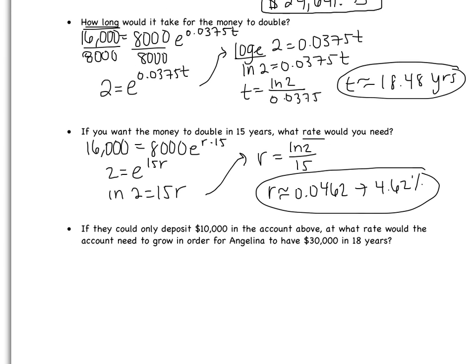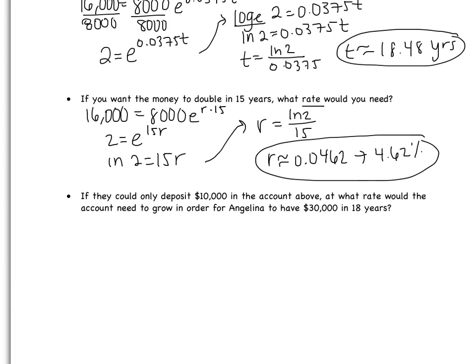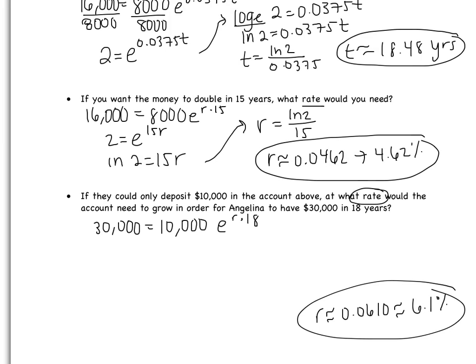If they could only deposit $10,000, at what rate would the account need to grow for Angelina to have $30,000 in 18 years? She starts with $10,000, wants $30,000, and T is 18. Solving this, you should get R to be about 0.0610, which is 6.1%. When you come to class tomorrow, I'll be checking that you have all problems completed with work and correct answers. Blank spaces will not receive credit.